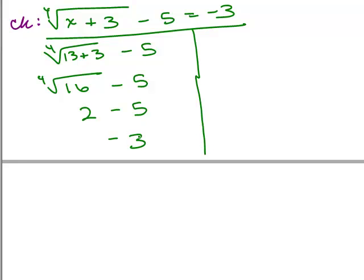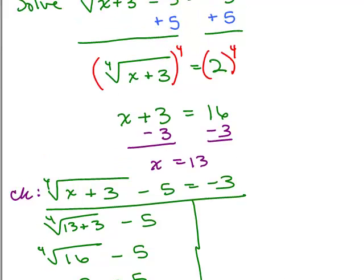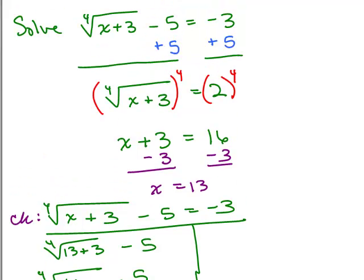So the left side simplifies to negative 3, and the right side is also negative 3, so it checks. So for this problem, x equals 13 is our answer, and so there's our solution, checked and all.